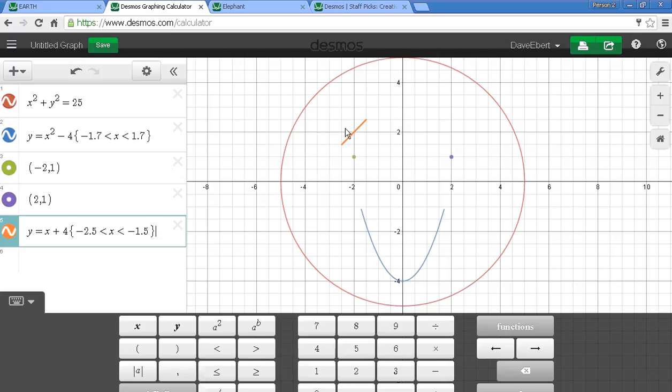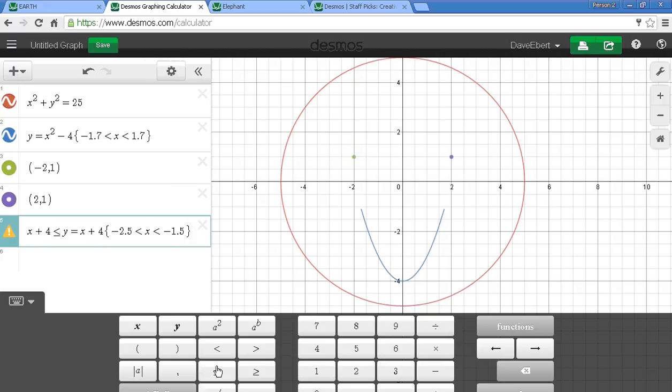Now I do want that eyebrow to be a little thicker, so what I really want is another segment just like that and I want to shade between those. We can shade inequalities as well. Really, I want to shade the y values between this line and then a line just above that. I'm going to say x plus 4 is less than or equal to y, which is less than or equal to x plus, let's go a little bit higher, so 4.3 perhaps. And there we go, that looks good.